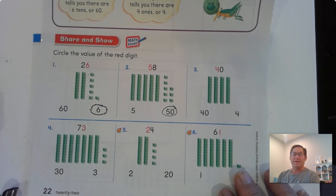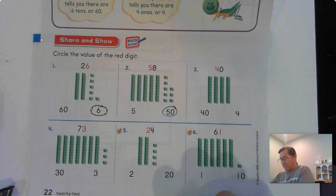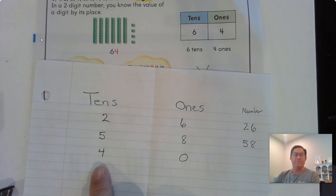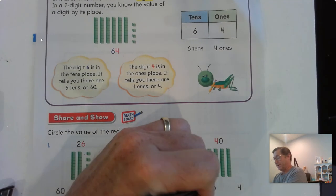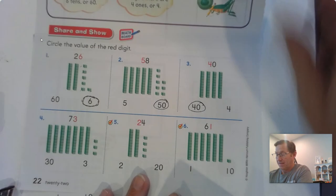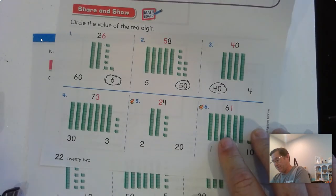How about the next one? 58. So 5 tens, 8 ones. The 5 is in the tens place, or 50. The value of the 5 is 50. Number 3: 40. We have 4 tens and 0 ones. If you have 4 tens, that means you have 40.